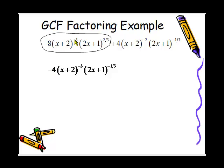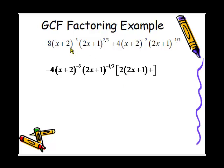x plus 2 to the negative 3 divided by x plus 2, negative 3 will cancel out. And 2x plus 1 to the two-thirds divided by 2x plus 1 to the negative one-third, we subtract the exponents. So the leftovers for this first term are 2 times 2x plus 1 to the first power.